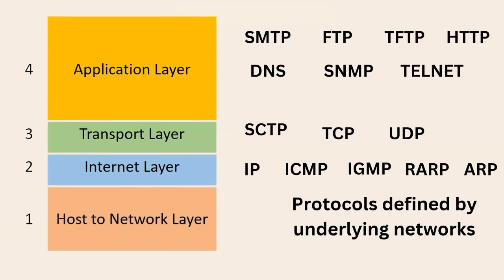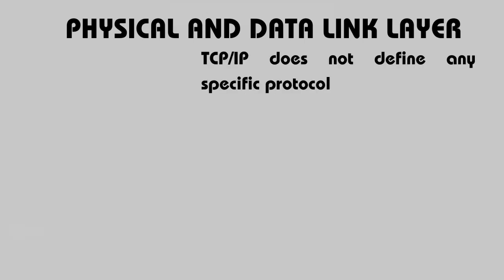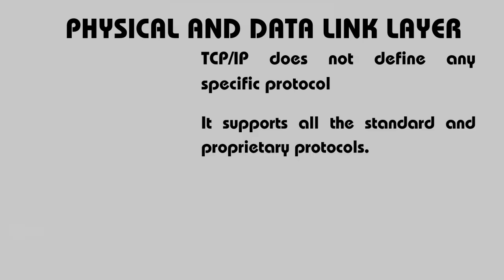The host-to-network layer has protocols defined by the underlying networks. As far as the host-to-network layer — that is, the physical layer and data link layer — is concerned, TCP does not define any specific protocol, so it supports all standard and proprietary protocols.